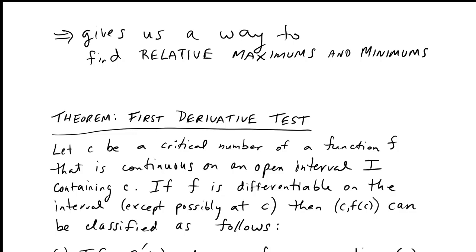Here's what this is really going to do for us. It gives us a way to find relative maximums and minimums. We looked at finding absolute maxima and minima, but now we're going to look at relative versions.